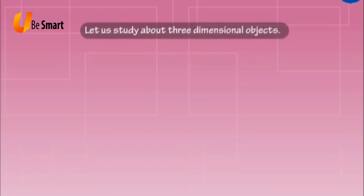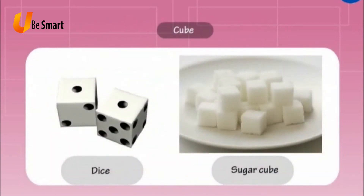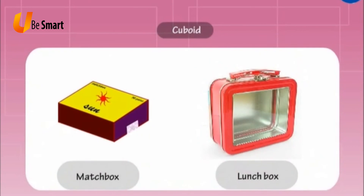Naming three-dimensional objects. Let us study about three-dimensional objects. Cube: Examples of cube are dice, sugar cube, etc. Cuboid: Examples of cuboid are matchbox, lunchbox, etc.